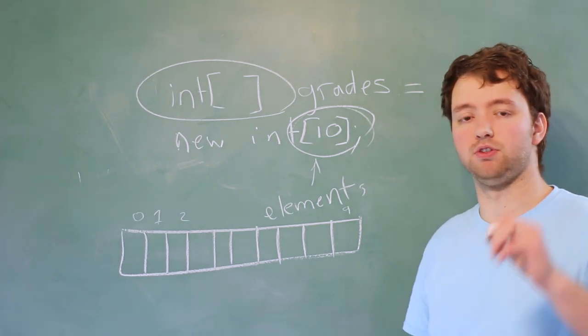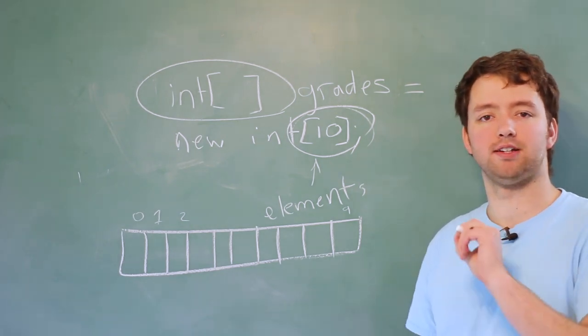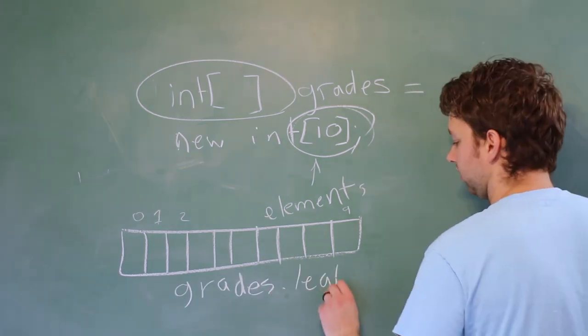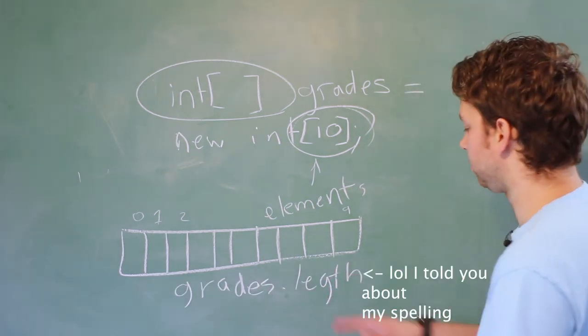You can get that size of an array using the array name dot length, which is a property. So, it's going to look like this. Grades dot length. No parentheses, just the name.